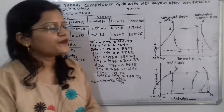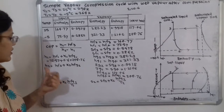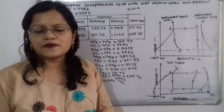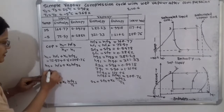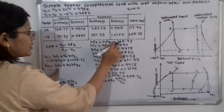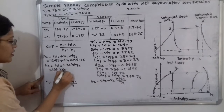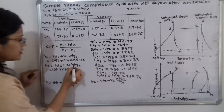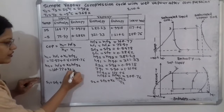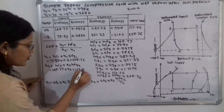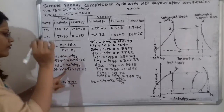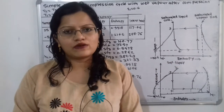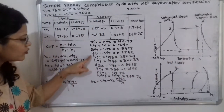Now for H2, the formula is H2 is equal to HF2 plus X2 times HFG2. The dryness fraction X2 is not given, so we put the known values: HF2 is 164.77, plus X2 multiplied by HFG2 which is 117.46. We need to find X2, the dryness fraction at point 2, and we do this using the entropy condition.